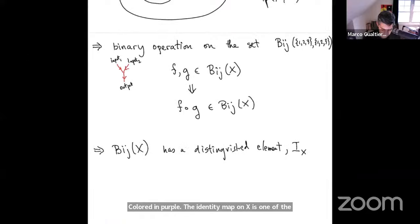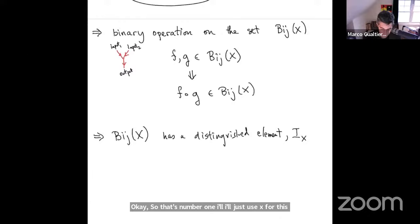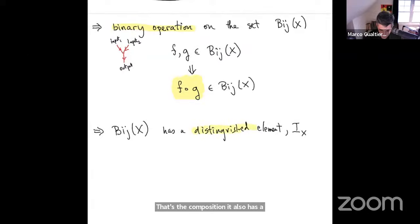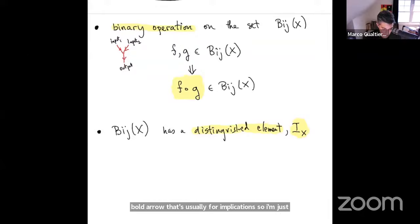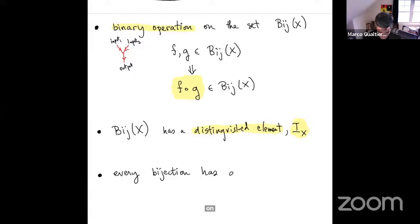The bijections from {1,2,3} to itself form a binary operation under composition: taking any two bijections f and g gives f∘g also in the bijections. Additionally, the bijections have a distinguished element — the identity map. And the third remarkable property is that every bijection has what is called an inverse.